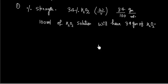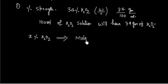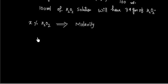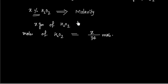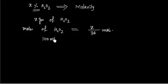We can express this percentage strength in terms of molarity as well. Let us say percentage strength is X percent H2O2, and our task is to convert this into molarity. So molarity means X grams of H2O2. We can convert this into moles: moles of H2O2 equals weight divided by molecular weight, which is X divided by 34.